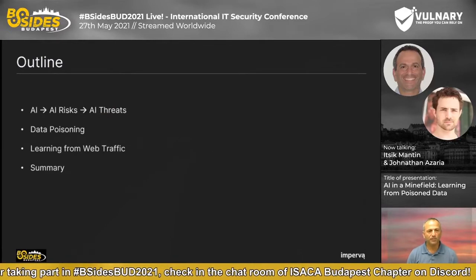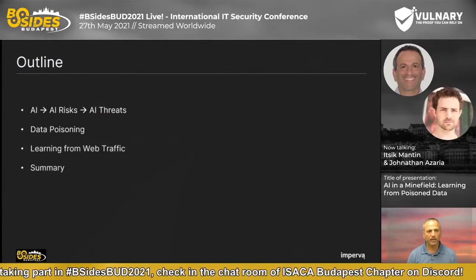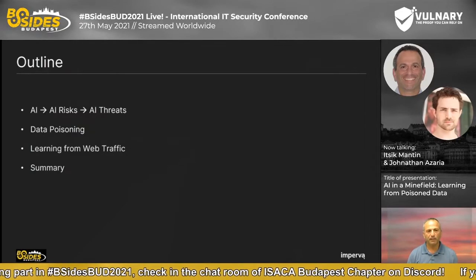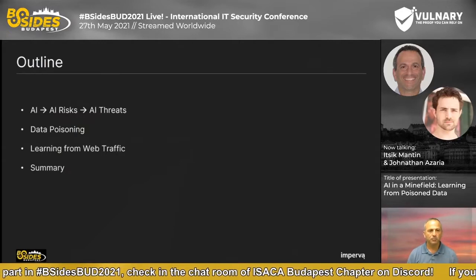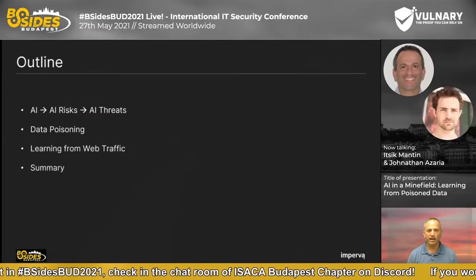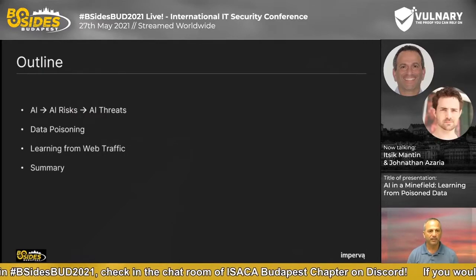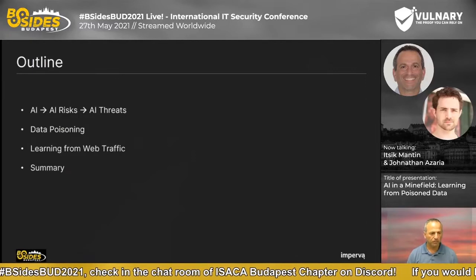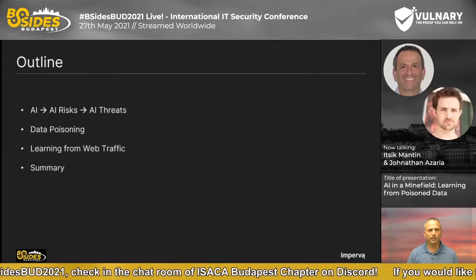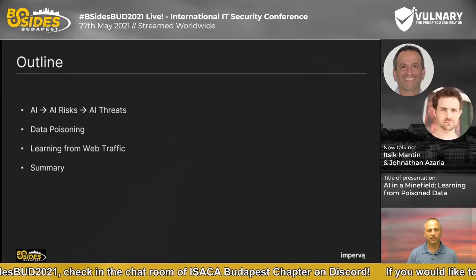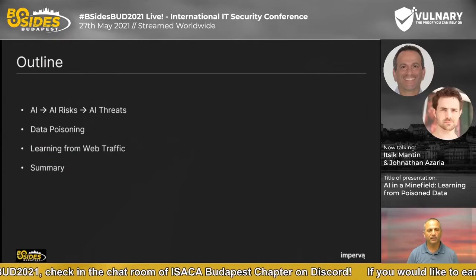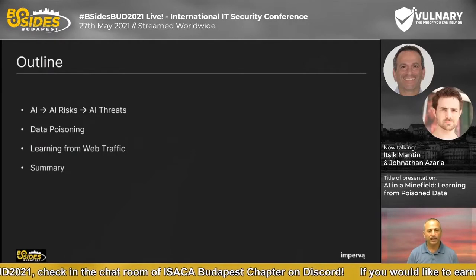We'll start by speaking about AI and all the risks that come with it. Then we'll dive into the threat landscape of AI, zoom in to data poisoning threats — why, how, and when this threat is applicable, and what we can do about it. Then we'll talk about how data poisoning can be mitigated in the world of web or API security, and we'll end with a summary and conclusions.